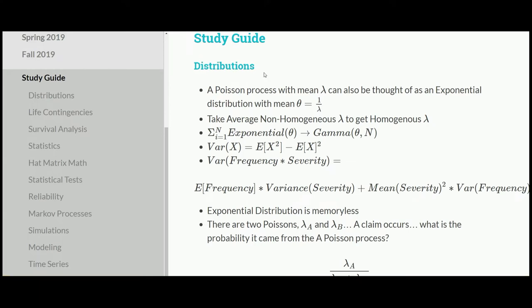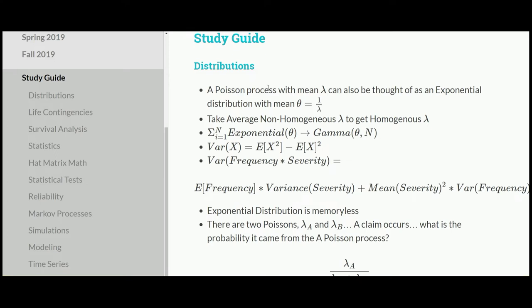First off, distributions — this corresponds primarily to Poisson and exponential, but there are a few other things. Just notation-wise, the difference between lambda and theta for exponential and Poisson distribution and how they relate is important to understand. If you have a non-homogeneous lambda and you're interested in the frequency over a given time period, taking the average frequency over that time lets you treat it as a homogeneous Poisson process. If you have the sum of independent but identically distributed exponentials, that's equivalent to a gamma with the same corresponding theta, where the second parameter is just n. Also, variance of x equals the expected value of x squared minus the expected value of x, squared.